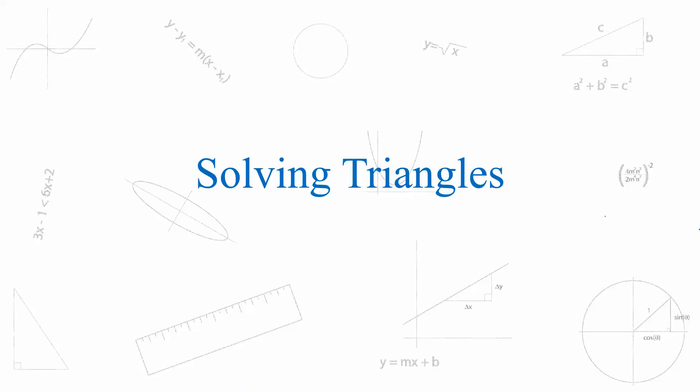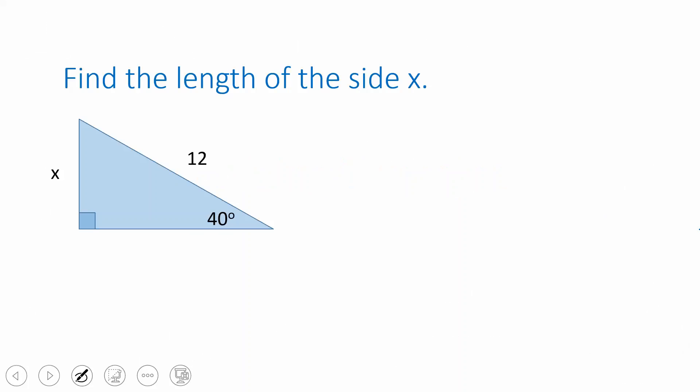This video will review solving triangles using trigonometry. Here's a triangle where we know the angle 40 degrees. This indicates a right angle, so that's 90 degrees. Now we know all three angles because the interior angles of a triangle have to add up to 180 degrees, so we can determine that the third angle is 50 degrees.